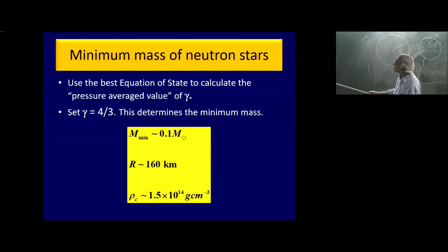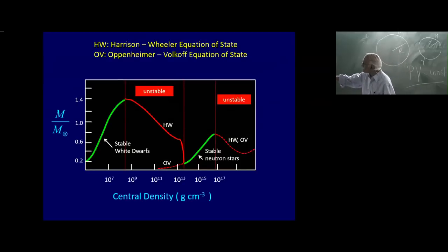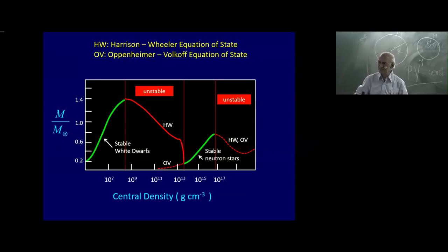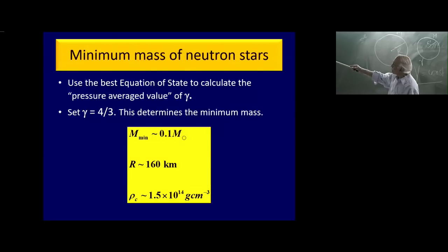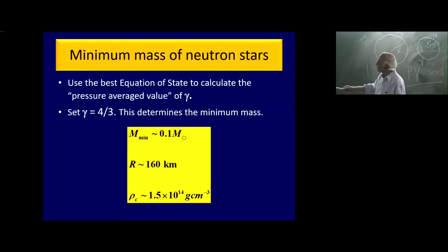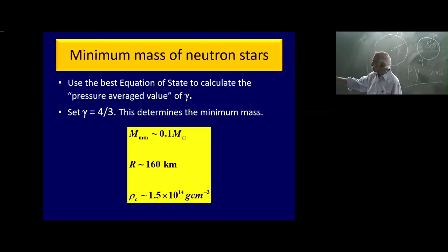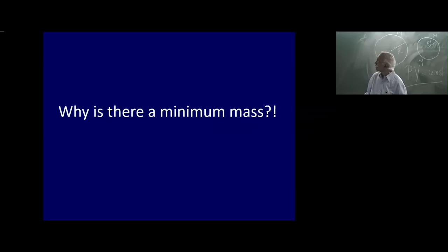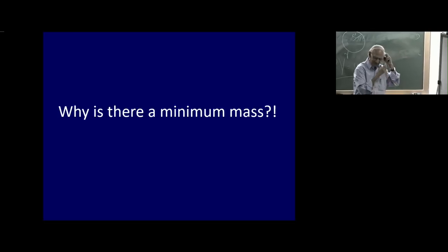How do you calculate the minimum mass? You ask at what mass and central density gamma becomes equal to 4/3. According to the Harrison–Wheeler equation of state, the minimum mass of a neutron star is 0.1 solar masses, with a radius of about 160 kilometers, though its central density is still more or less the same as other neutron stars.